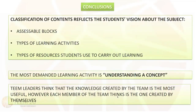As a conclusion, it is important to remark that students have created the resource classification around two axes: the different accessible blocks of the subject and the learning tasks carried out in it. In the first axis, the accessible blocks are specific to each subject, and this will vary significantly for each of them. On the axis related to learning, the students have used a classification that could be applied to very different subjects. Regarding the type of knowledge created by the student, it was found that most of the resources are connected to the activities of understanding a concept, which provides information about the student's demands on the types of resources. Finally, according to students' perception of the learning acquired, it is worth noting that the leaders think that the most useful knowledge has been the one created by the team, and meanwhile the rest of the people assert it has been the one they have created by themselves.